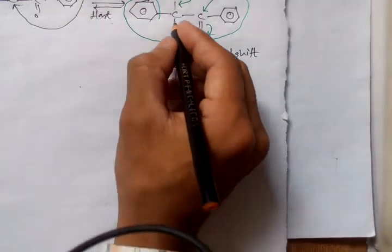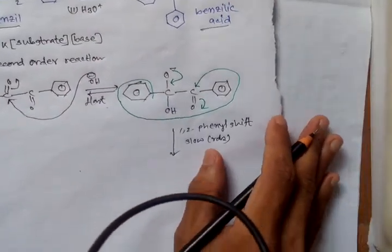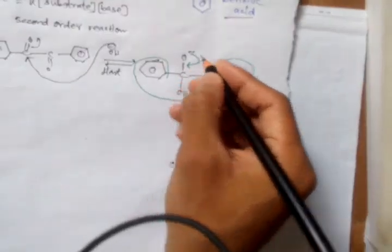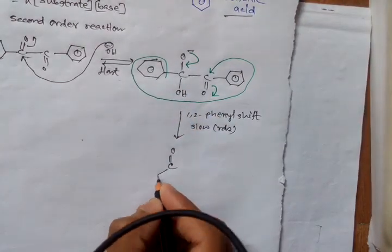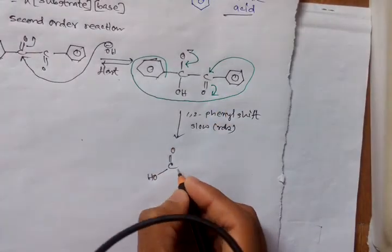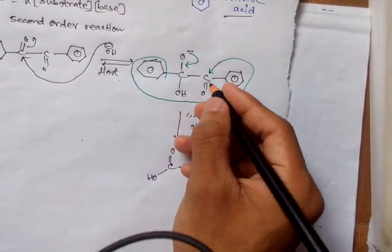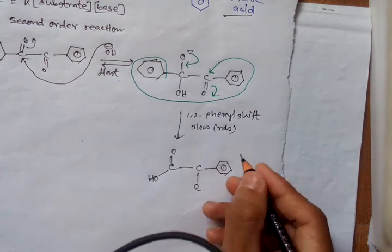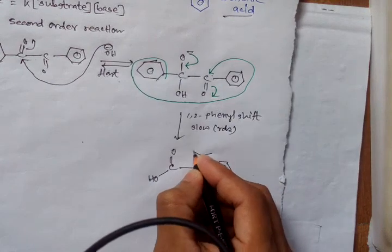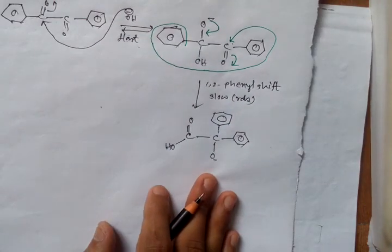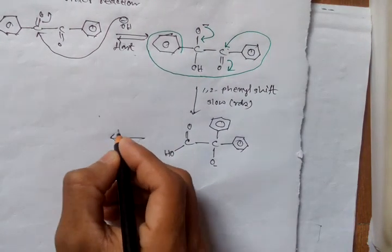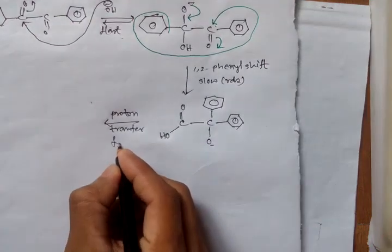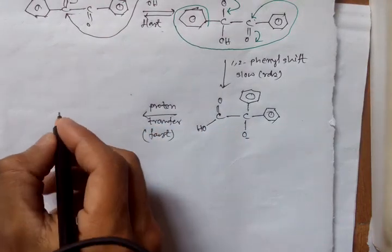We get an intermediate where there is a double bond oxygen, an OH, and a carbon bearing a negative oxygen. The phenyl group has migrated here. After that, there is a proton transfer, which is a very fast process.